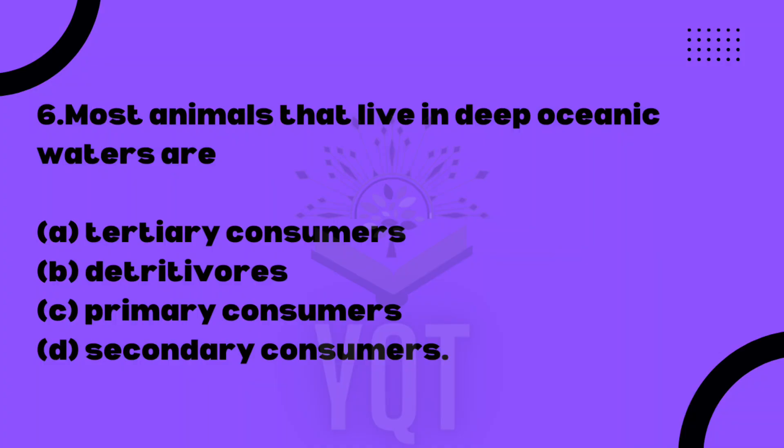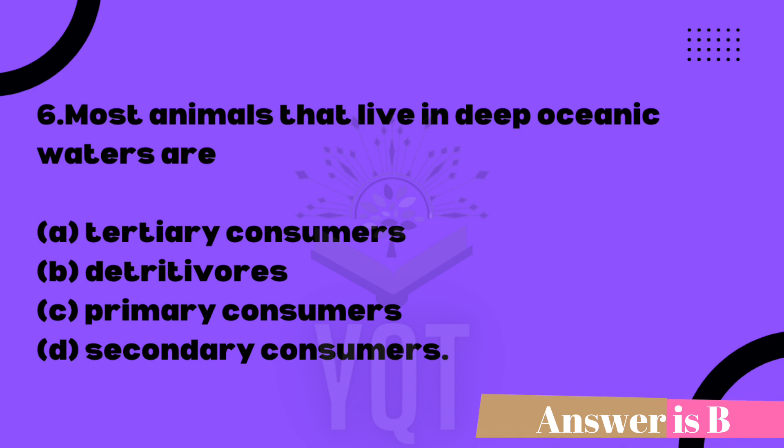Most animals that live in the deep ocean waters are? This is a tricky question. The options are: territory consumers, detrivores, primary consumers, secondary consumers. In the deep sea there is not much light and fewer living organisms. Detrivores are there — they don't depend on light. So Option B, detrivores, is the correct answer.